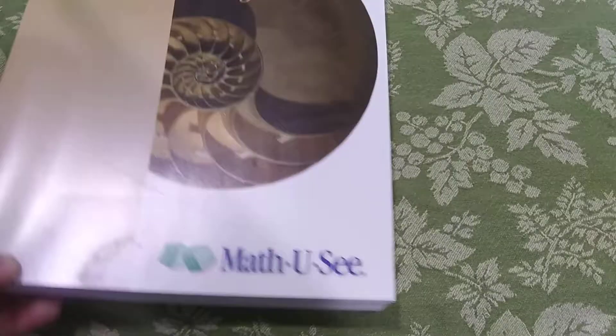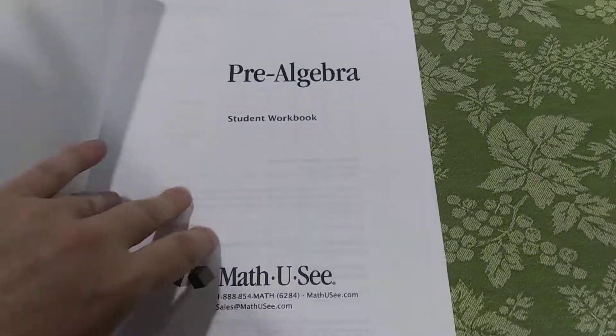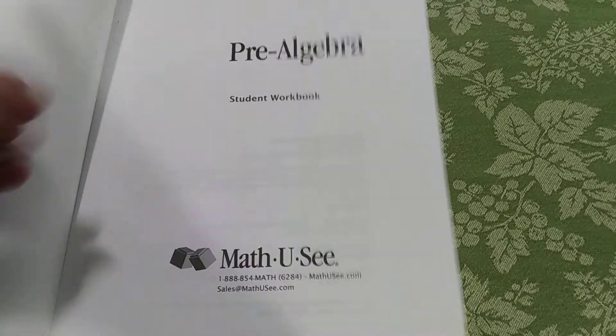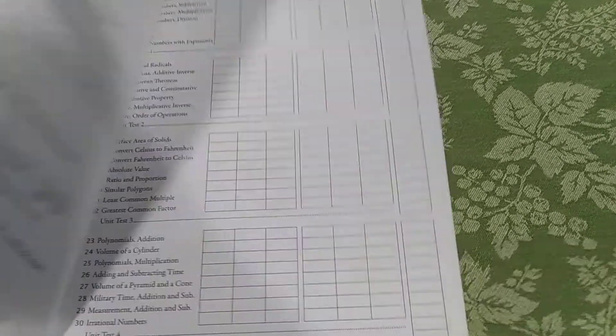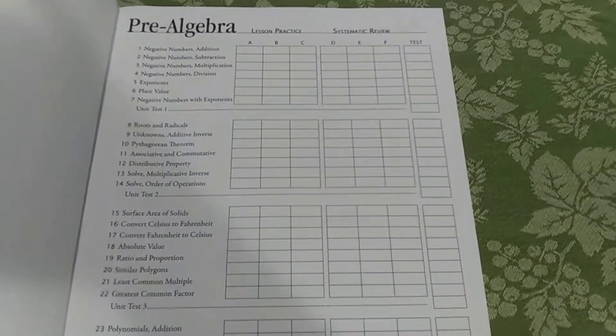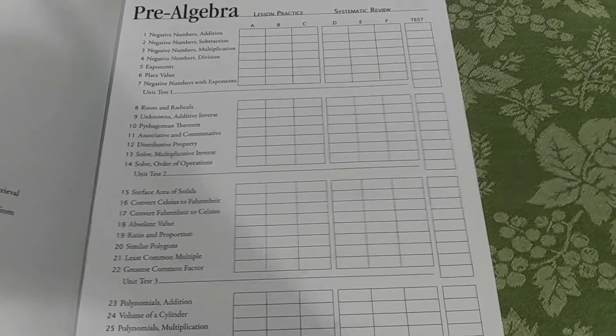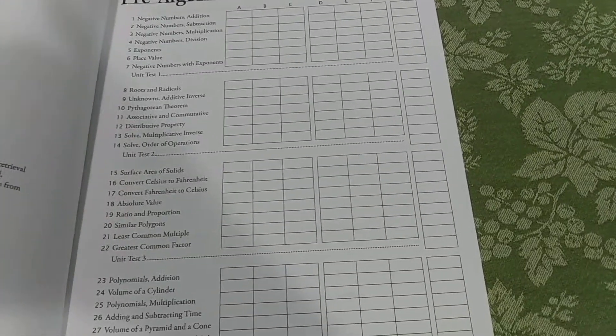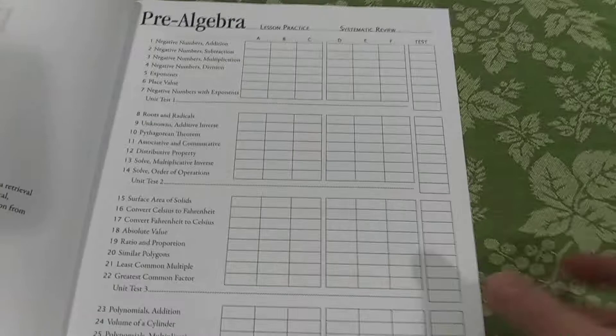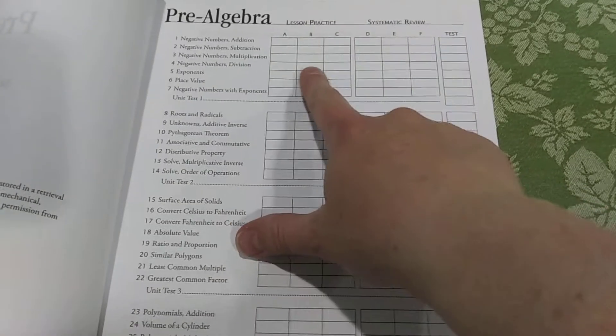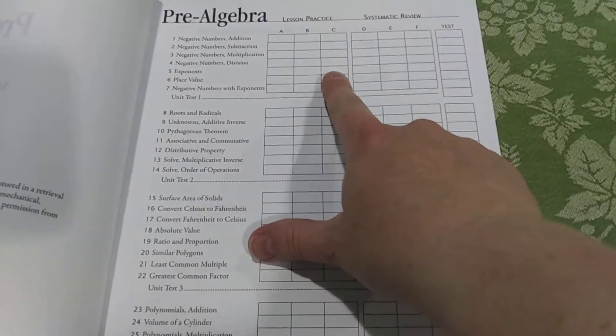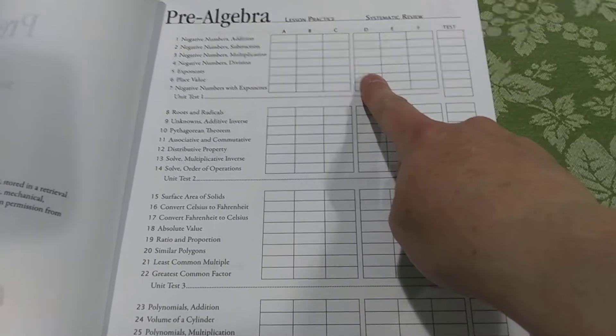I do have the textbook for Pre-Algebra that I can show you. So, in the beginning, there's a nice schedule you can check off which lessons they did and their grade on their test. There are unit tests you can do. So, with my son, like I said, we do lessons A, B, and C of the new concept. And then we do review D.